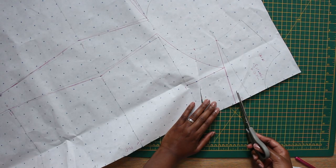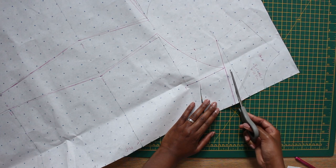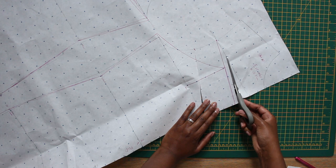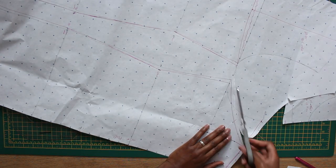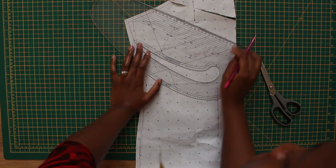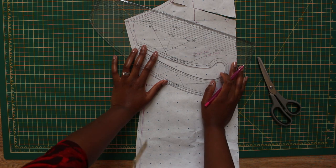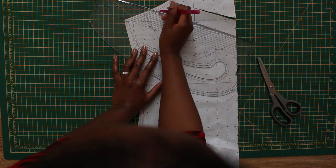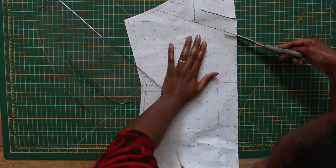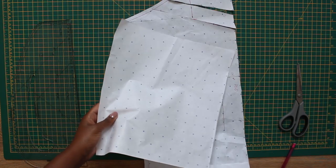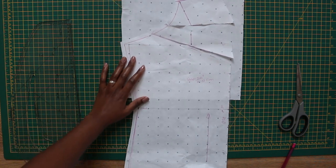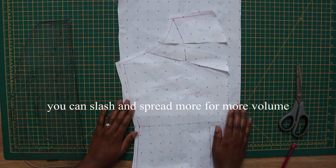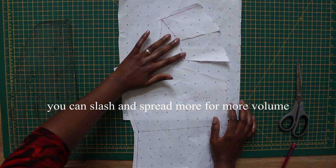I'm gonna leave a centimeter seam allowance so I don't have to redraw the whole thing. I'm just gonna add one more slashing line because I want to have an even spread. I'm just gonna cut, take a new piece of paper and lay it down like that, and then now I can slash more.